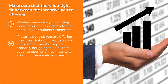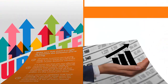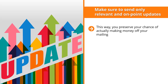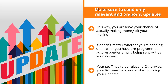Another way to optimize your email marketing is to send out only relevant and on-point updates or autoresponder texts. When people sign up for a specific niche, everything they receive from you should talk about that niche and nothing else. If you send updates that have nothing to do with what your list members signed up for, don't be surprised if many unsubscribe or stop reading your emails. Make sure to send only relevant and on-point updates to preserve your chance of actually making money off your mailing list.